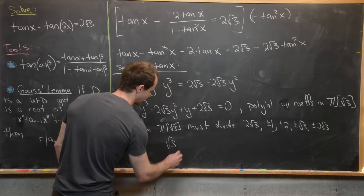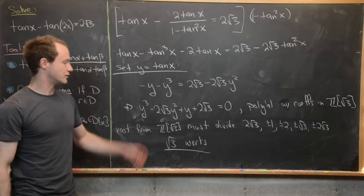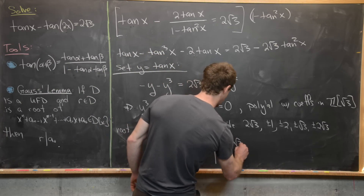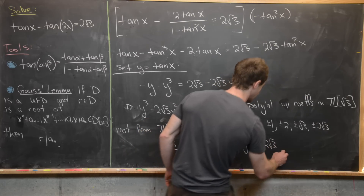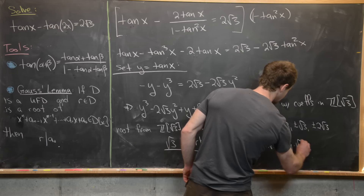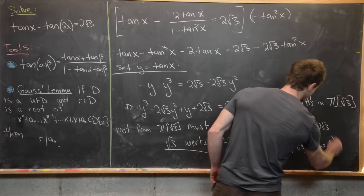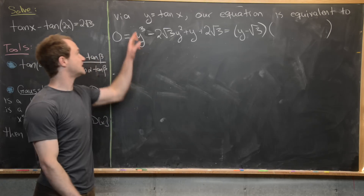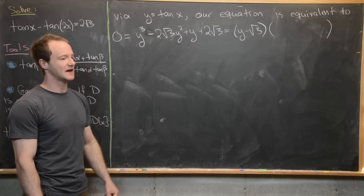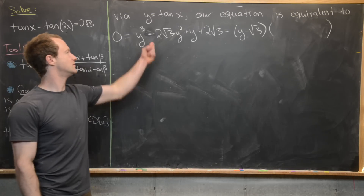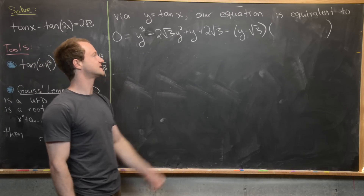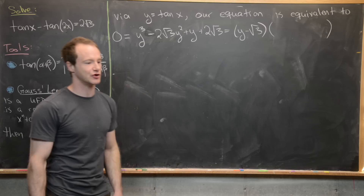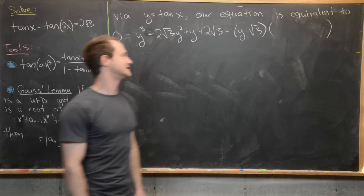So root 3 is a root of this polynomial, which tells us we can write y cubed minus 2 root 3 y squared plus y plus 2 root 3 as (y minus root 3) times some quadratic polynomial. Our original equation, via the substitution y equals tangent of x, is equivalent to finding the roots of this cubic. Using abstract algebra involving unique factorization domains, we guessed one root: root 3.